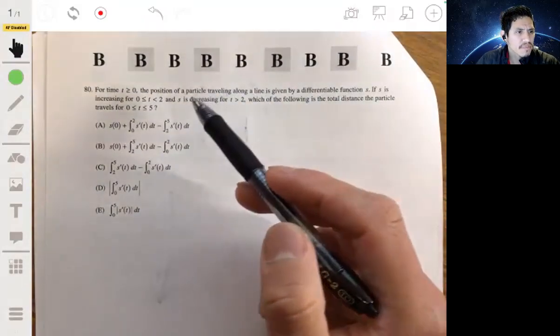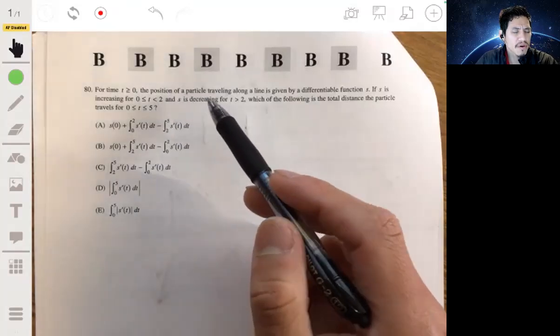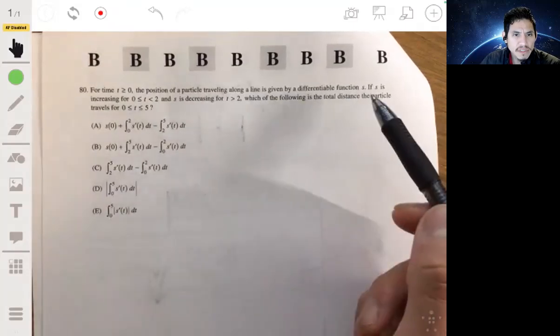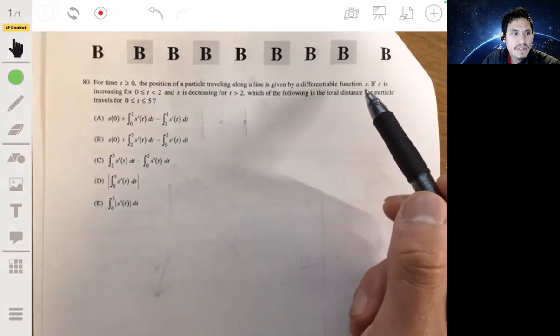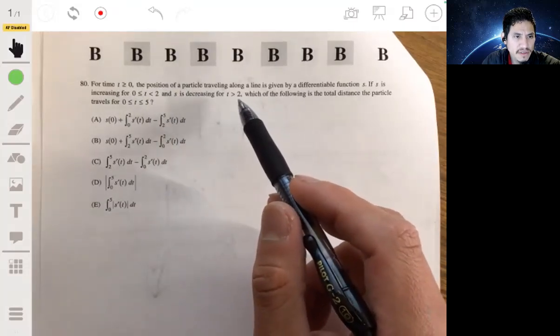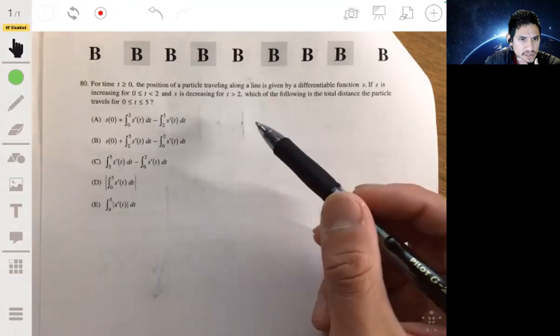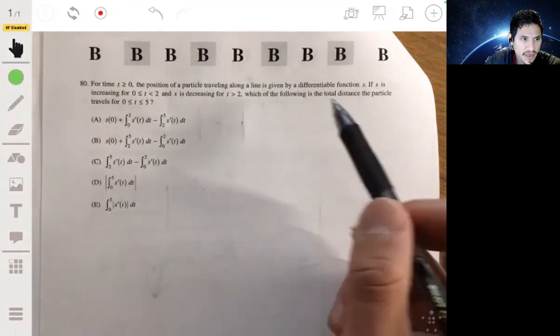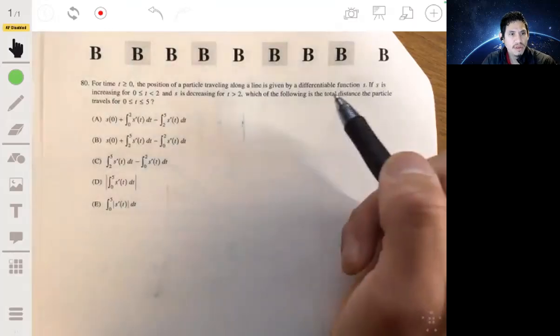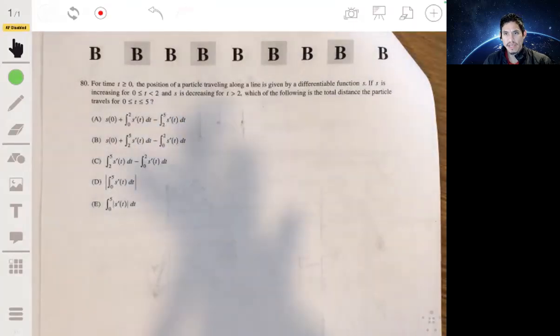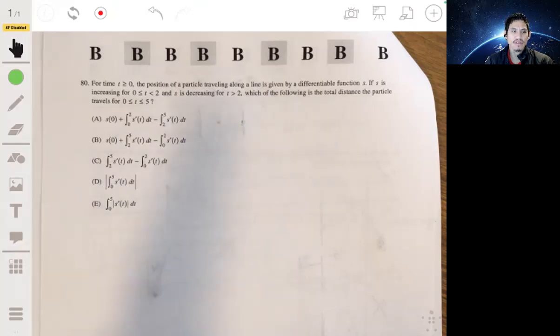Problem 80: the position of a particle traveling along a line is given by the differentiable function s. It's increasing from zero to two and decreasing for t greater than two. Which of these will give the total distance the particle travels from zero to five?